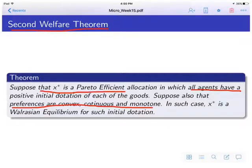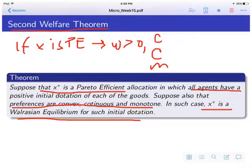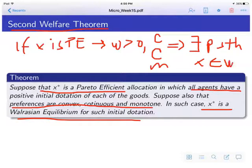In such case, there will exist some prices such that x can be a Walrasian equilibrium for such initial endowment. So what we are saying is, if x is Pareto-efficient, I must add positive initial endowments, I must add continuous, convex, and monotone preferences, and then I will be able to find some prices such that that x I was talking about is part of a Walrasian equilibrium.